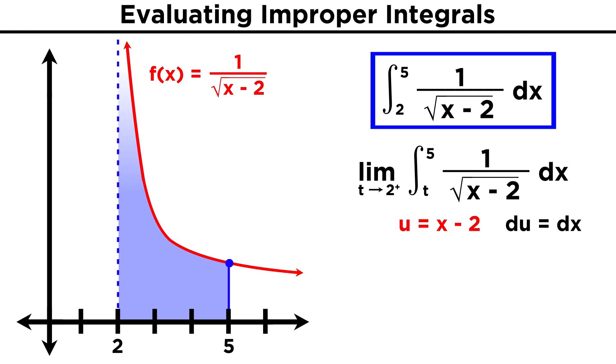To integrate, let's just use a simple substitution, changing x minus two into u. That means that du will be equal to dx, and we have u to the negative one half du. Integrating will give us u to the positive one half over one half, or two root u. We then change u back, and we have two root x minus two.